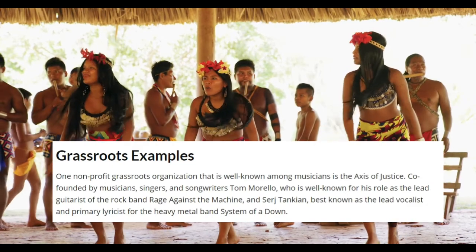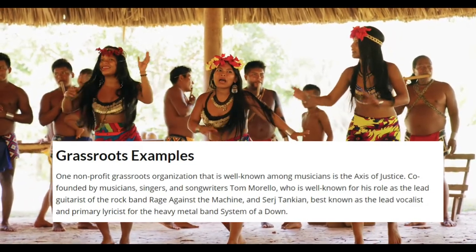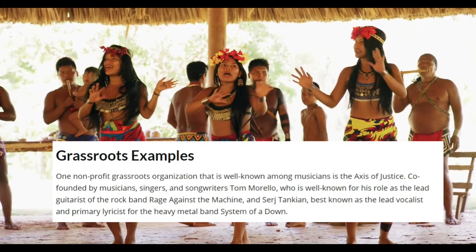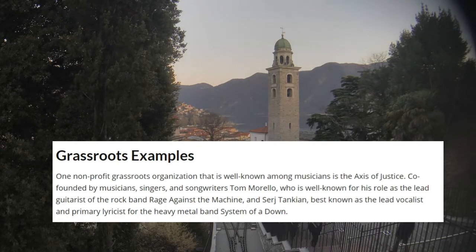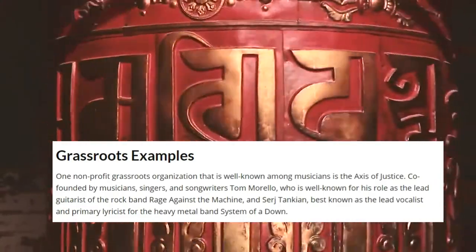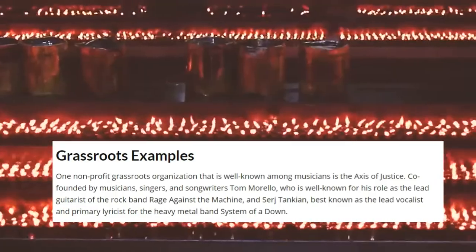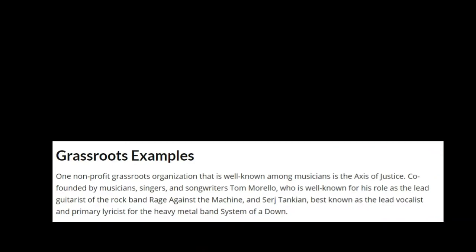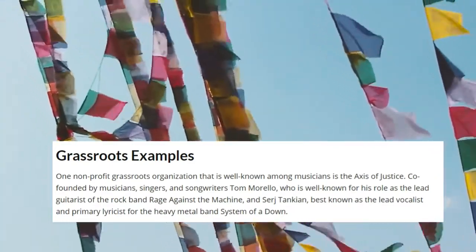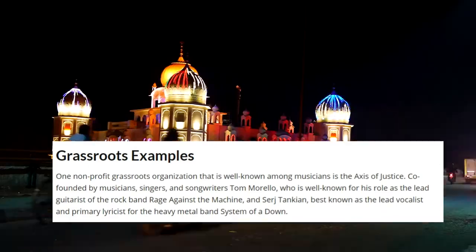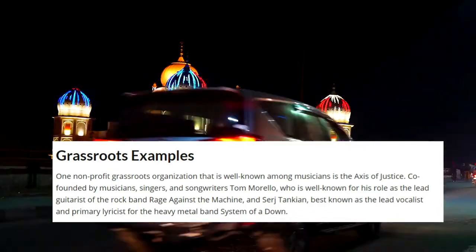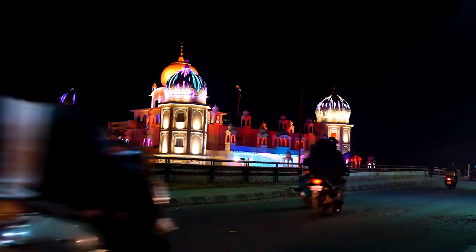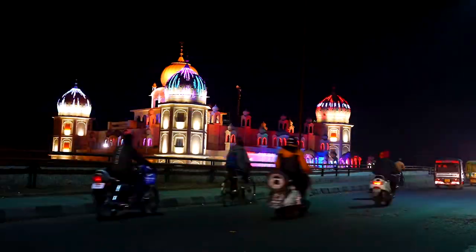Grassroots movements are built from the power of local and community involvement. Since they often start locally, these movements aim to raise money, raise awareness for their cause, build recognition, and, if possible, deepen political participation to make their objectives a reality. Campaign strategies strongly focus on local involvement — hosting neighborhood meetings, distributing posters and pamphlets, talking to people on the street, going door-to-door, gathering signatures for petitions, running fundraising events, organizing peaceful rallies or public demonstrations, and asking people to share their views on social media using specific hashtags.